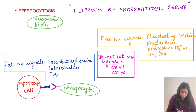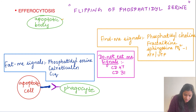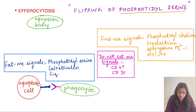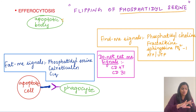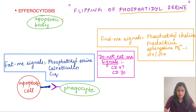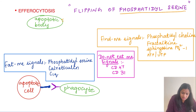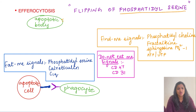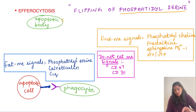The apoptotic body contains phospholipids in its membrane. One such phospholipid is phosphatidylserine, which is normally present on the inner leaflet of the cell membrane. In the apoptotic body, phosphatidylserine has flipped to the outer aspect of the cell membrane. This flip makes the apoptotic body recognizable — essentially attracting phagocytic cells to come and engulf it.